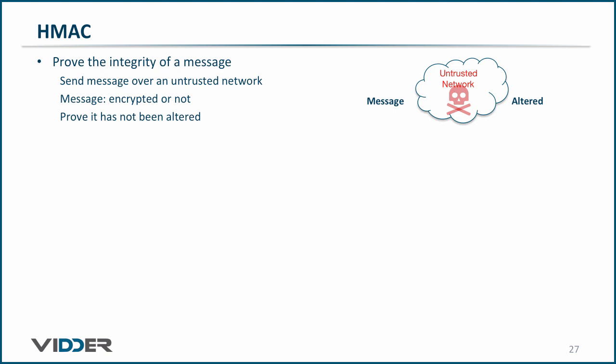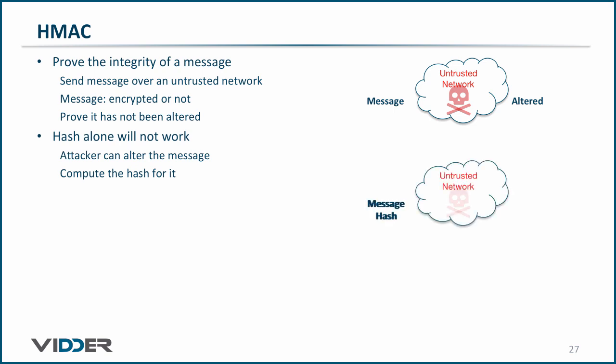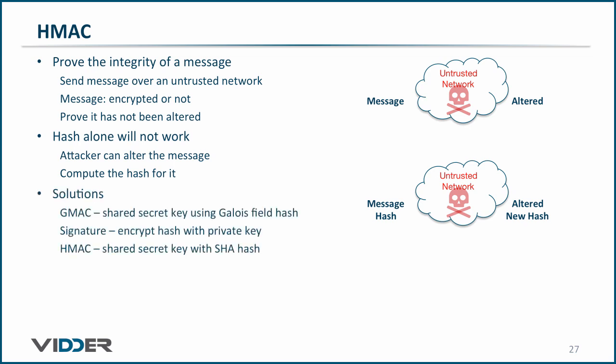You may be thinking we could just take a hash of the message. But a hash alone will not work, because the attacker could just alter the message and then compute the new hash for the altered message. There are some solutions to this problem. We have already seen how the GMAC algorithm uses a secret shared key to create a hash of the message, where the integrity of the message and hash pair cannot be compromised unless the adversary has the secret key.